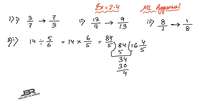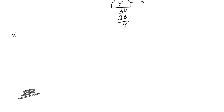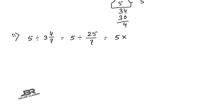Number 2, part 2: 5 divided by 3 whole 4/7. First convert the mixed number: 7 × 3 + 4 = 25 by 7. Then 5 divided by 25/7 becomes 5 × 7/25. Cancel 5: the answer is 7 by 5. You can also convert it into a mixed fraction.